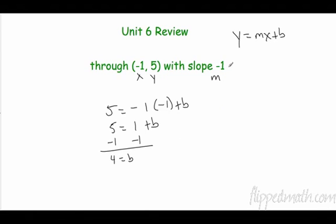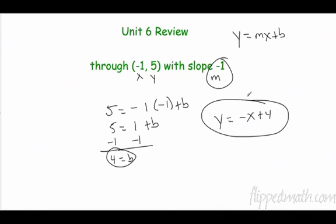So b equals 4. So now I plug in my slope, my intercept, and my equation is y equals negative x plus 4. That's the great thing about this chapter. It's basically all the same thing, just lots of different variations of it.